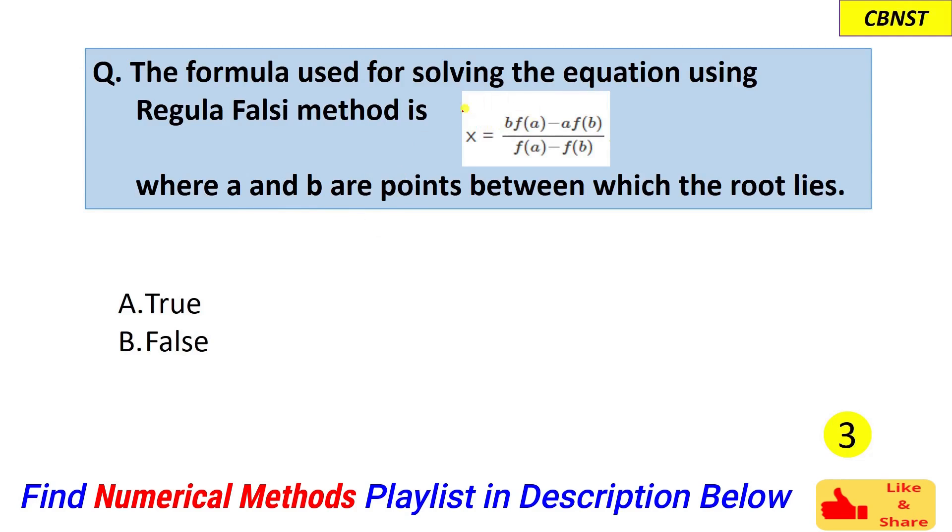Hello everyone. In this question, this formula is given to us and we are told that this is the formula for the Regula Falsi method. Here, a and b are the two points between which the root lies. We have to tell whether this formula for the Regula Falsi method is correct or not.